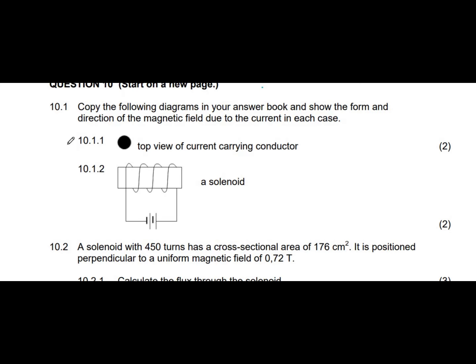Question 10.1: Copy the following diagrams in your answer book and show the form and direction of the magnetic field due to the current in each case. 10.1.1: Given a black dot, it says top view of a current-carrying wire — that question is worth two marks. 10.1.2: You're given a setup for a solenoid. Let's solve this problem together.